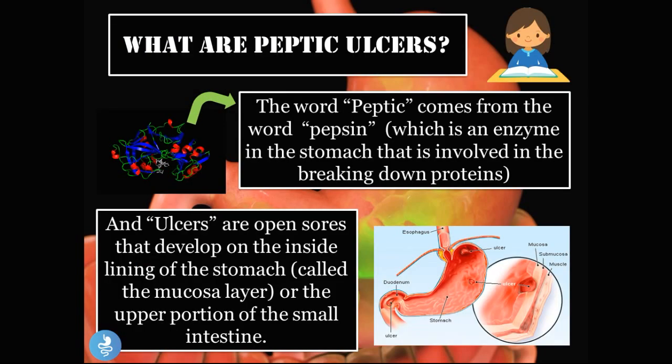So what are peptic ulcers? The word peptic comes from the word pepsin, which is an enzyme in the stomach that is involved in the process of breaking down proteins. Ulcers are open sores that develop on the inside lining of the stomach, which is called the mucosa layer, or the upper portion of the small intestine, which is called the duodenum.